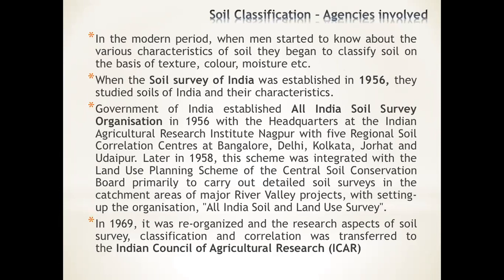In the modern period, when man started to know about the various characteristics of soil, they began to classify soil on the basis of texture, color, and moisture content. For example, black soil is named because of its color. Olive soil, which is gray in color, can be found in the northern plains. Soil classification depends upon the type of color and the moisture content.